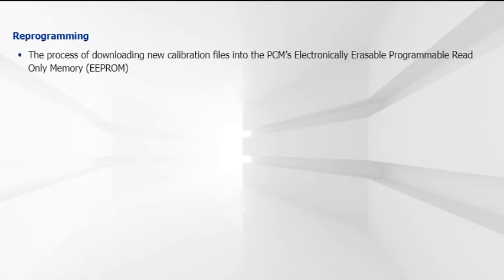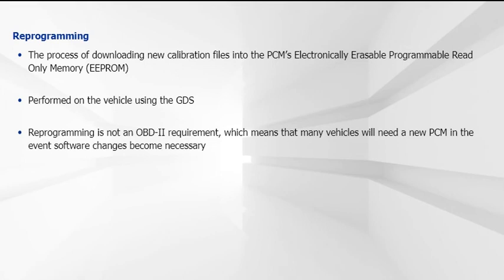Reprogramming consists of downloading new calibration files from a scan tool via a modem into the PCM's electronically erasable programmable read-only memory, or EPROM. This can be done on the vehicle using the appropriate equipment. Since reprogramming is not an OBD2 requirement, however, many vehicles will need a new PCM in the event software changes become necessary.